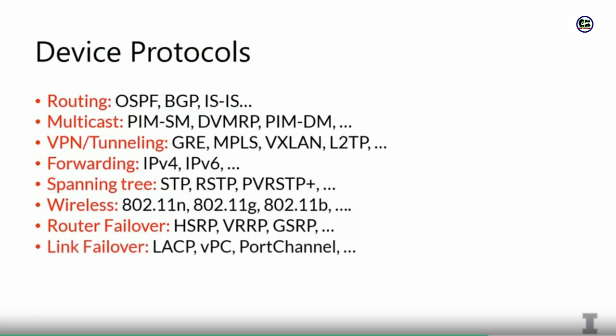There are also protocols for link failover. If you have a router connected to another router over a link and that link might fail, you can set up multiple links between those routers and configure LACP or port channel to designate one link as a backup for the other. You can also load balance traffic over those links, or create a virtual link comprising multiple physical links — for example, three one-gig links can be treated as one three-gig link, giving you additional bandwidth.